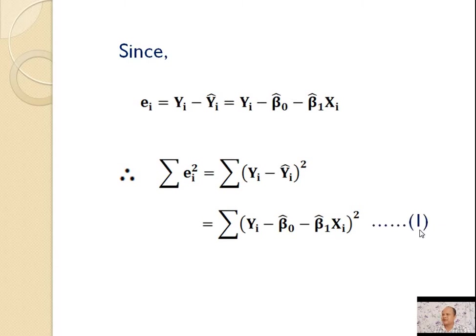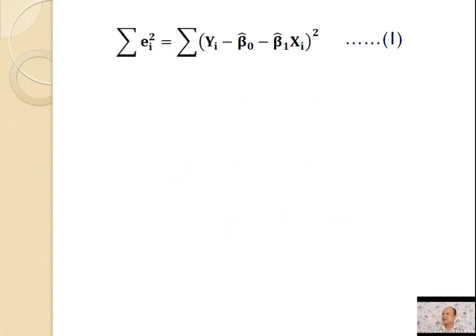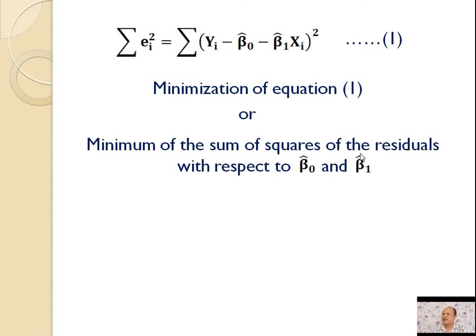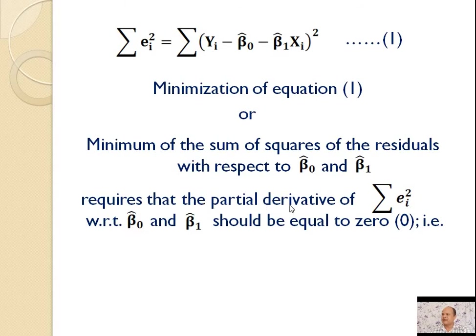This is Equation 1. Minimization of Equation 1, or minimum of the sum of squares of the residuals with respect to β̂₀ and β̂₁, requires that the partial derivative of Σeᵢ² with respect to β̂₀ and β̂₁ should each be equal to 0. That is, ∂(Σeᵢ²)/∂β̂₀ = 0.